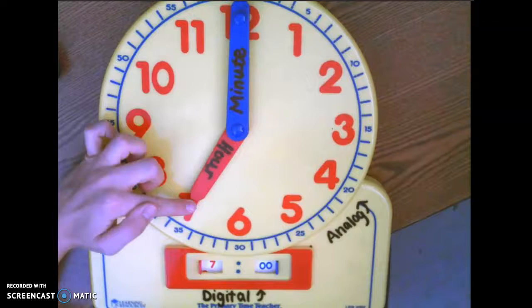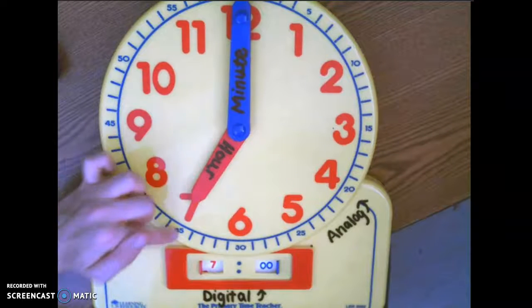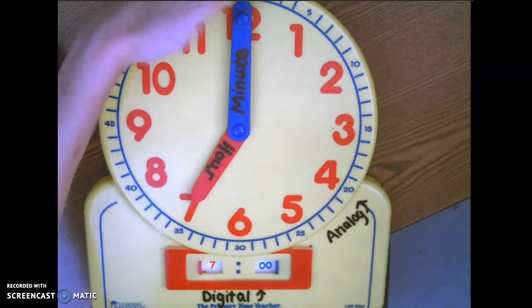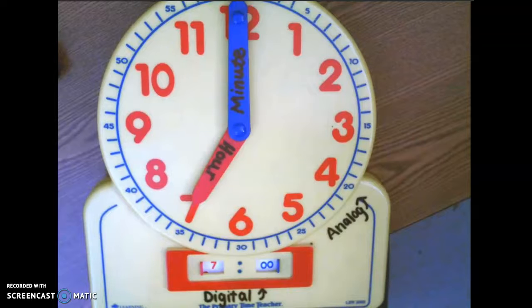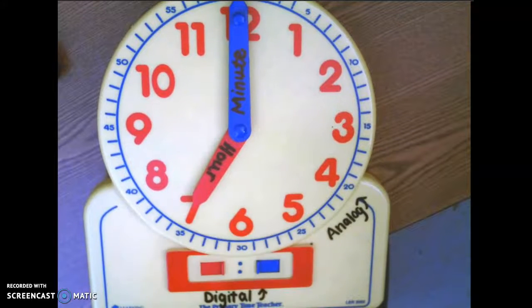We know it's seven o'clock because our short hour hand is on the seven and our minute hand is at the top of the hour, at the 12, the top of the clock. Great job.